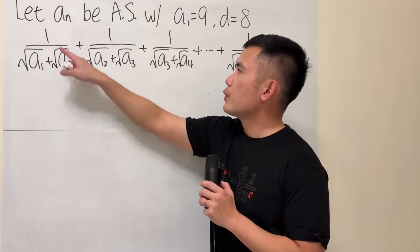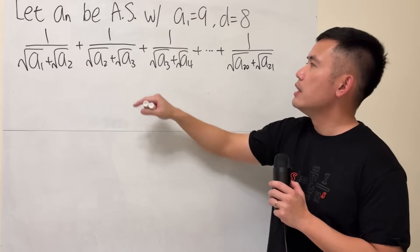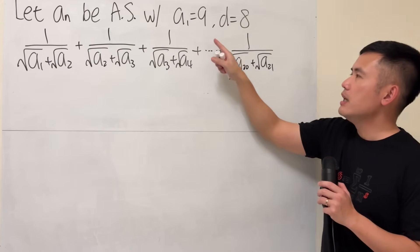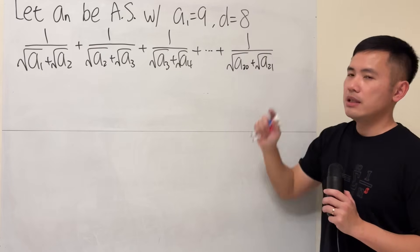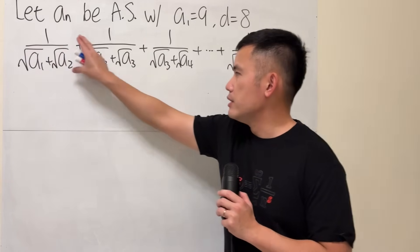Right here we have a_n, which is an arithmetic sequence, and we know the first term is 9 and the common difference is 8, and we are going to compute this expression.